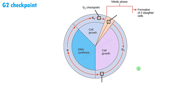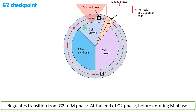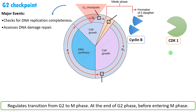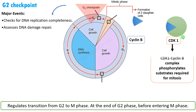The second checkpoint is the G2 checkpoint. It regulates the transition from G2 to M phase (mitotic phase), at the end of G2 phase before entering M phase. This checkpoint ensures that DNA replication is completed properly and that DNA damage repair has completed without any error. Cyclin B and CDK1 are involved. Cyclin B accumulates during G2 phase and binds to CDK1, forming the cyclin B-CDK1 complex. Once activated, it phosphorylates multiple substrates required for mitosis, and this complex is essential for transition from G2 to M phase.